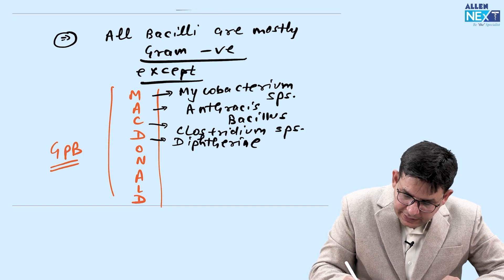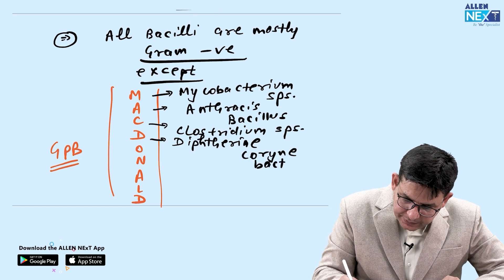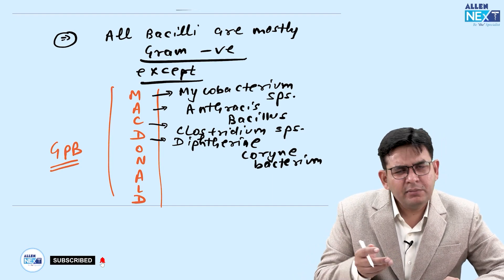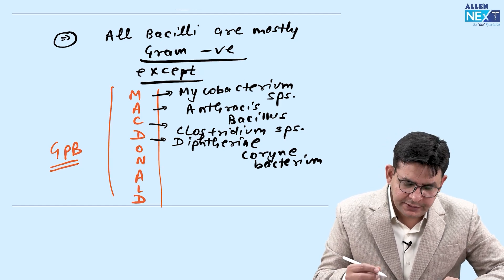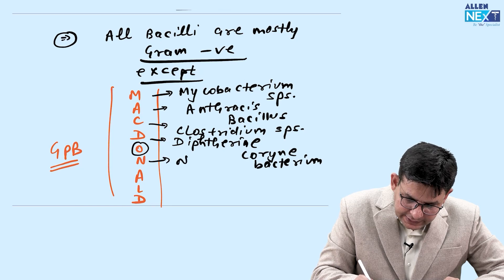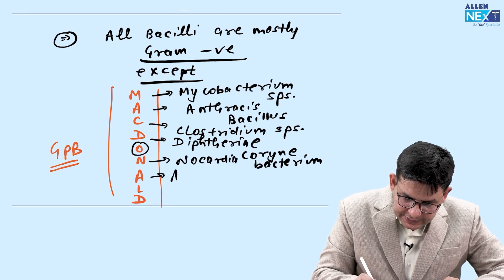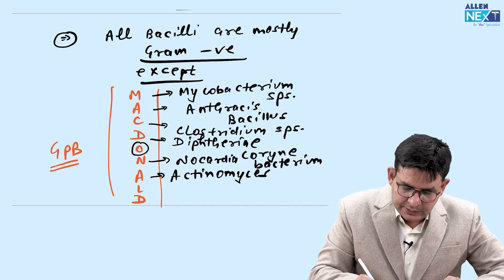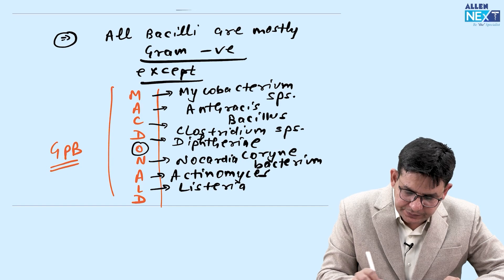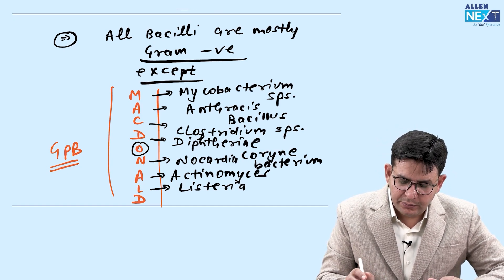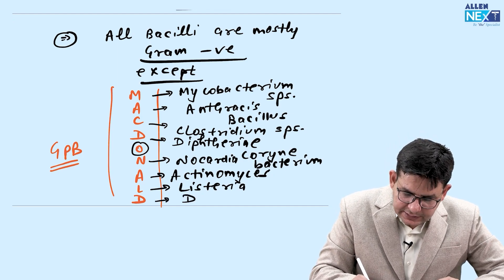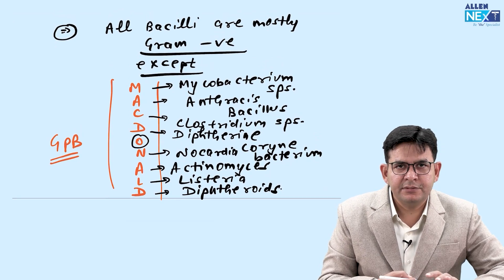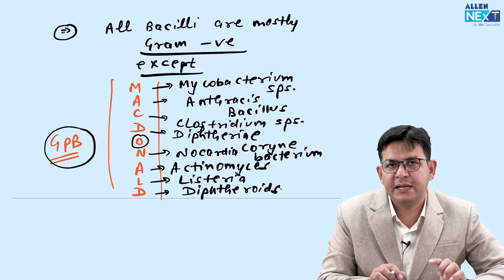D is Diphtheria — full name is Corynebacterium diphtheriae (also called Corynebacterium diphtheria). O is just for the mnemonic. N is Nocardia. A is Actinomyces (some write Actinomycetes). L is Listeria — an important species is Listeria monocytogenes. The final D is Diphtheroids.